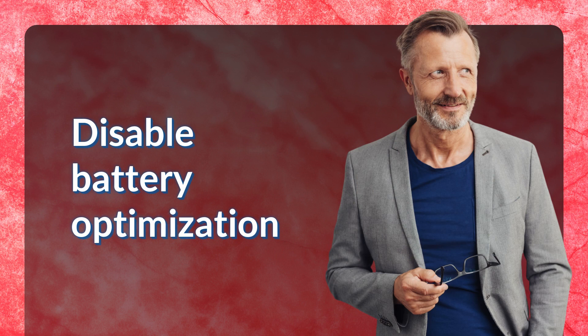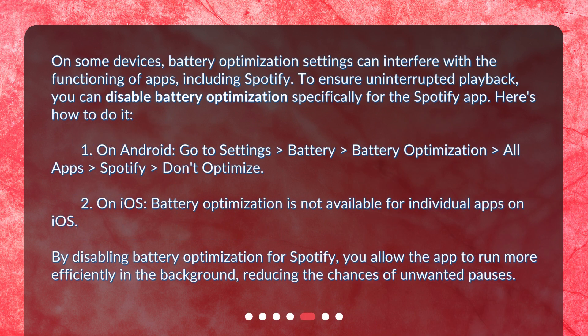Disable Battery Optimization. On some devices, battery optimization settings can interfere with the functioning of apps, including Spotify. To ensure uninterrupted playback, you can disable battery optimization specifically for the Spotify app. On Android, go to Settings > Battery > Battery Optimization > All Apps > Spotify > Don't Optimize.